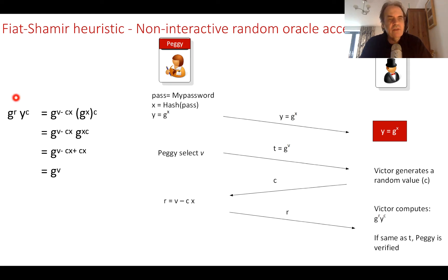The reason that works is that g to the power of r is g to the power of v minus cx, and y to the power of c is g to the power of x to the power of c. The way the logs work is that g to the power of x to the power of c is g to the power of xc.